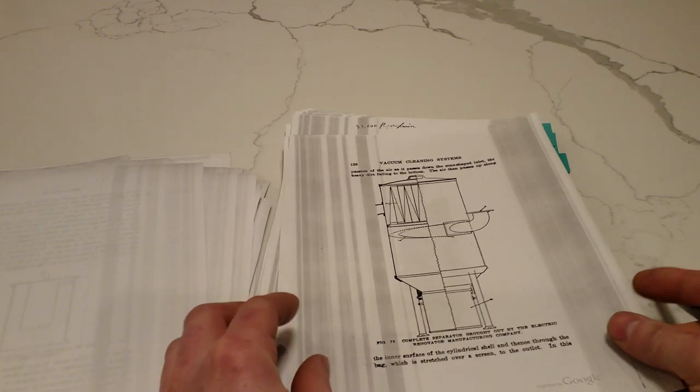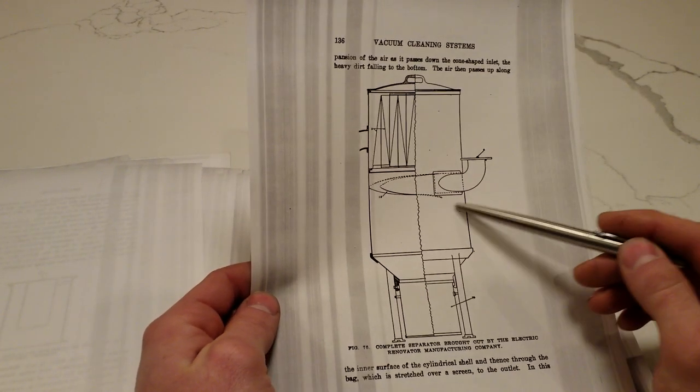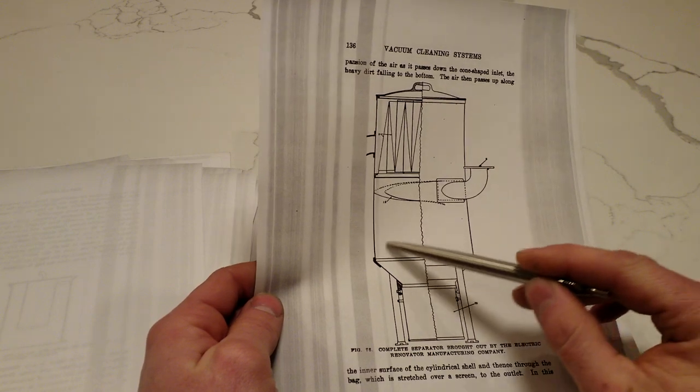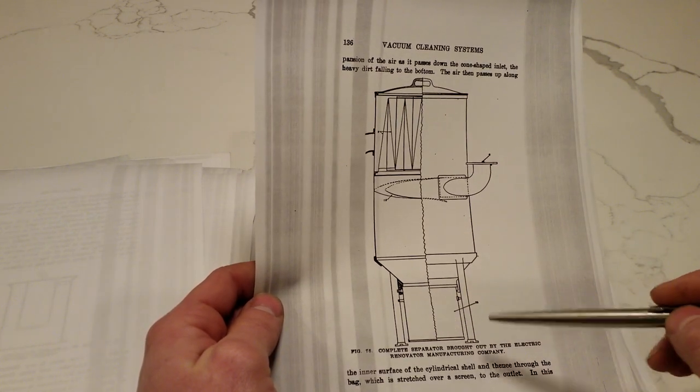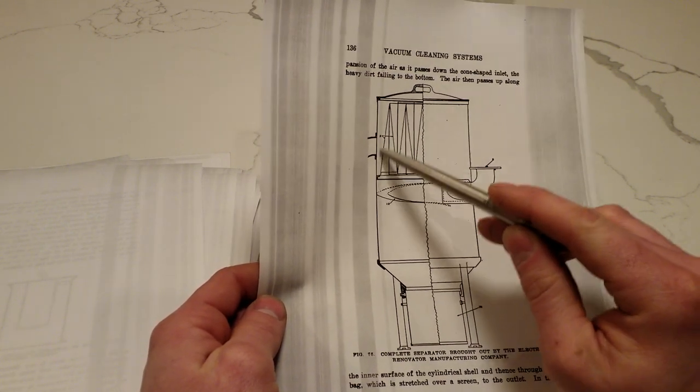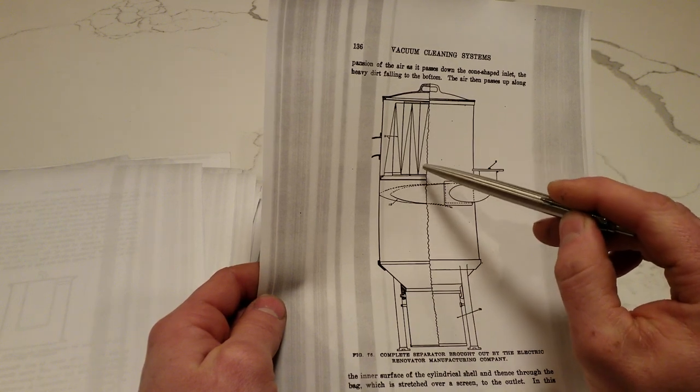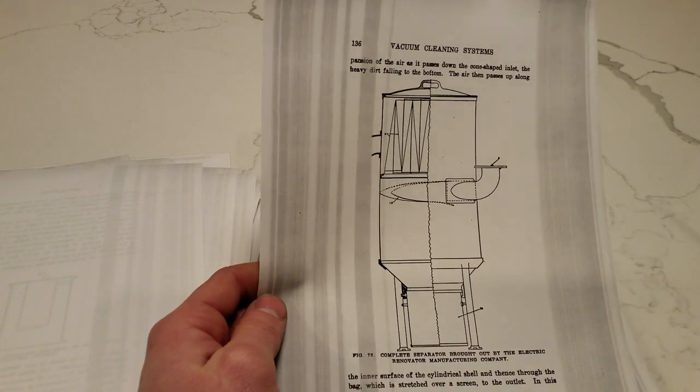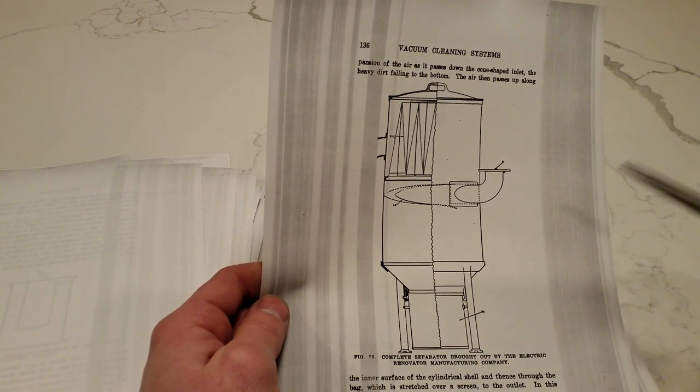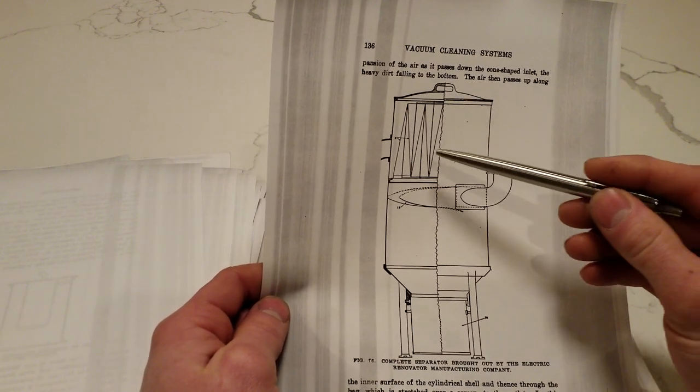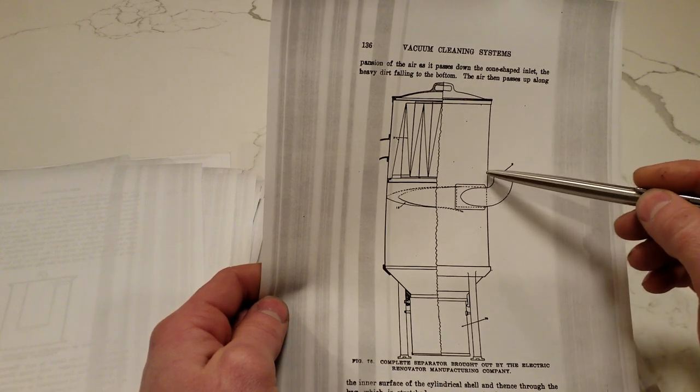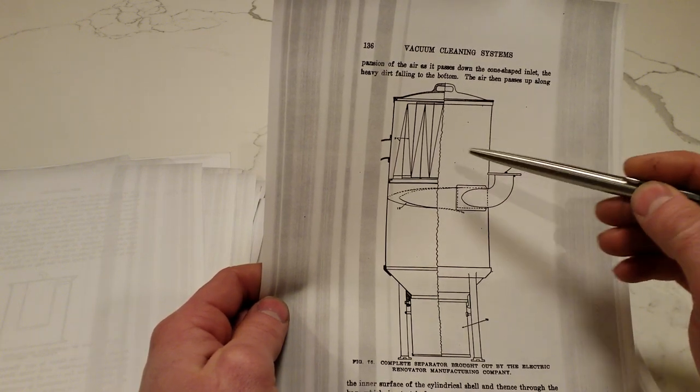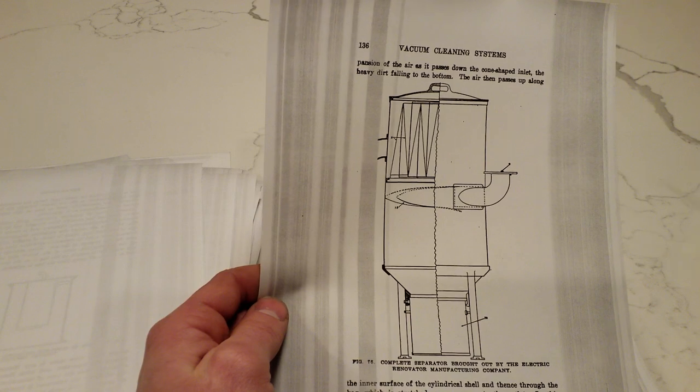Here's an Invincible. And, so you've got a cyclonic separator. The air would come down here, fall into the bucket, the dirt would. And, then you have a pleated cloth filter up here. This is basically the exact kind of separator you'll see on a car wash central vacuum today. It's called a tubular bag separator. And, there would be a door that you would open up to this section. And, then you can take the bags out and throw them in the washing machine.